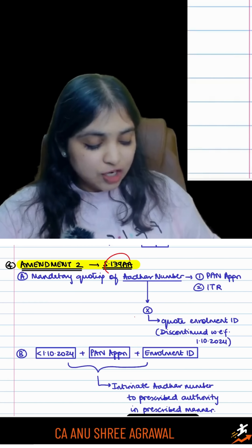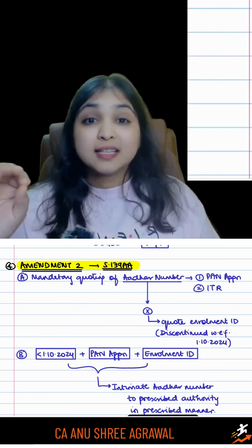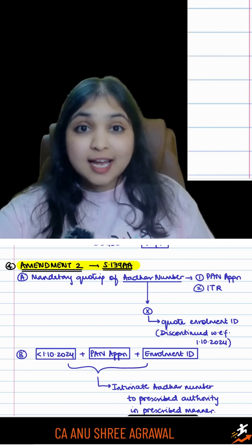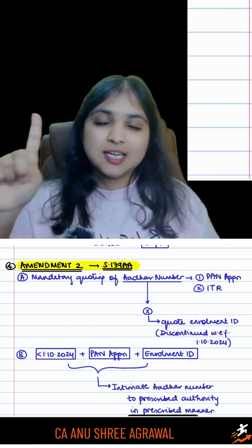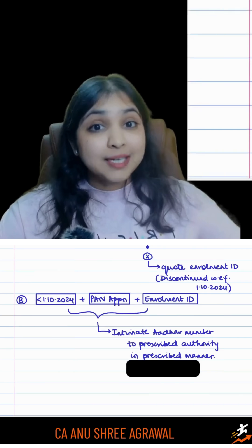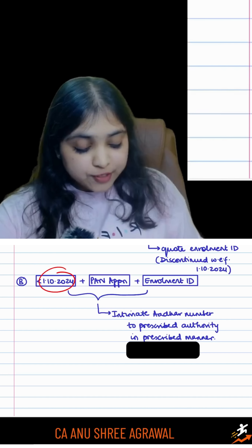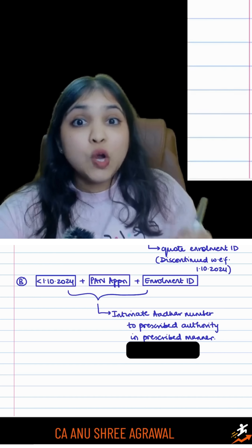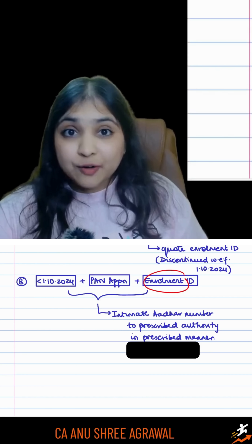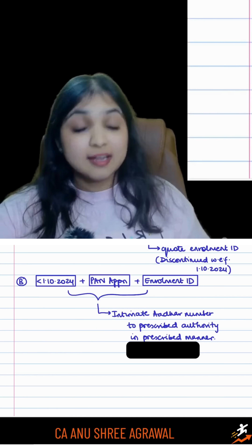Your second amendment is in Section 139. This section makes it mandatory to quote the Aadhaar number in two places — in your PAN application and in your ITR. However, before 1st October 2024, we also had the option of quoting the enrollment ID instead.